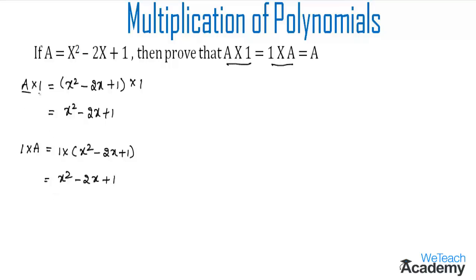Here we observe that A × 1 and 1 × A both equal the given polynomial A. Therefore, we can conclude that the set of polynomials has multiplicative identity under multiplication. The condition is A × 1 = 1 × A = A.